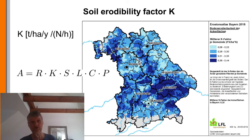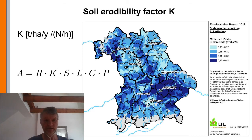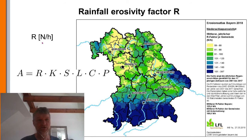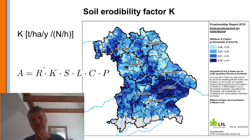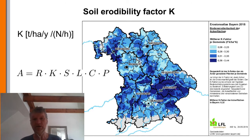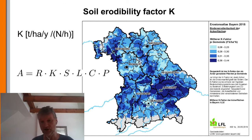The next factor is the soil erodibility factor K, which describes only what kind of soil exists in any area. The unit of K is tons per hectare per year divided by the unit of the rainfall erosivity factor, so that the product always gives the correct unit for soil erosion. The soil erodibility factor for Bavaria shows the different kinds of soils across the region, and I will also make a separate lecture on how to determine the soil erodibility factor for a given area.